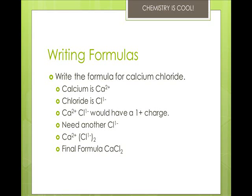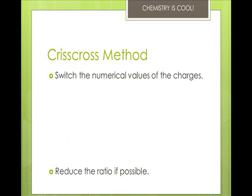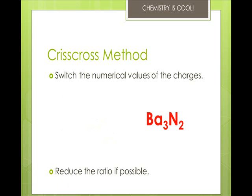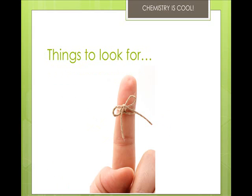You can get charges on the pieces first — cations from the periodic table and anions from the periodic table or the polyatomic list. An easier method is the criss-cross method, where you switch the numerical values of the charges to the subscripts. For example, barium ion has a 2 and nitride has a 3, so you criss-cross them to get Ba₃N₂. Then reduce the ratio if possible, since you want the empirical unit. If cations have a Roman numeral in parentheses, that number is their charge, not how many there are. Anions ending in '-ide' are monoatomic; '-ate' or '-ite' endings indicate polyatomic ions.